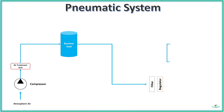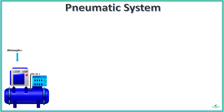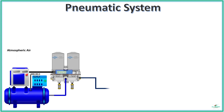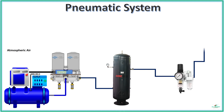For a pneumatic system to work, it is important that the air be pressurized and treated without any contaminants. For this purpose, we have a system of components connected together called a pneumatic system. In general, a pneumatic system has a compressor, an air treatment unit, a receiver tank, an FRL unit, directional control valves, and an actuator.